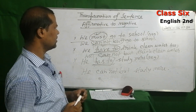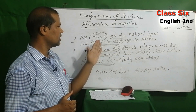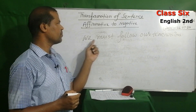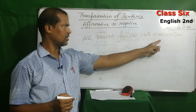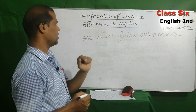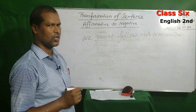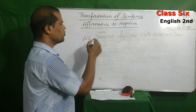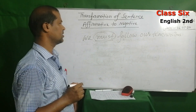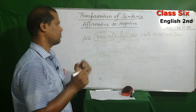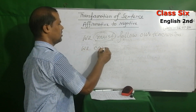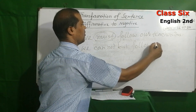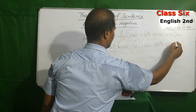Here is a practice sentence: 'We must follow our teachers — make it negative.' Here we can see the modal word 'must.' So for making the negative form, replace 'must' with 'cannot but': 'We cannot but follow our teachers.'